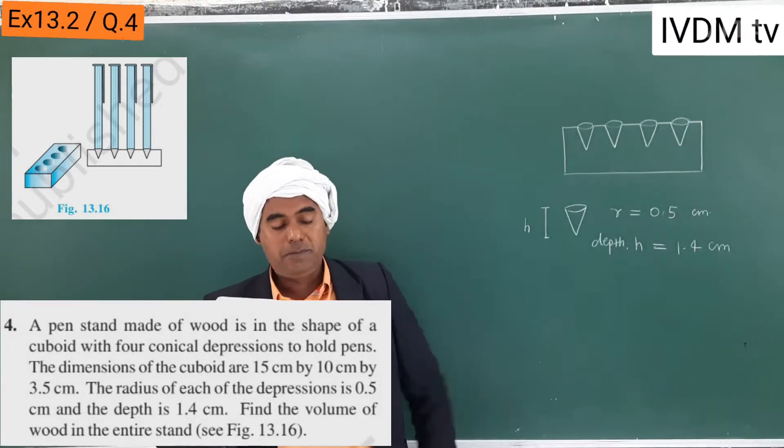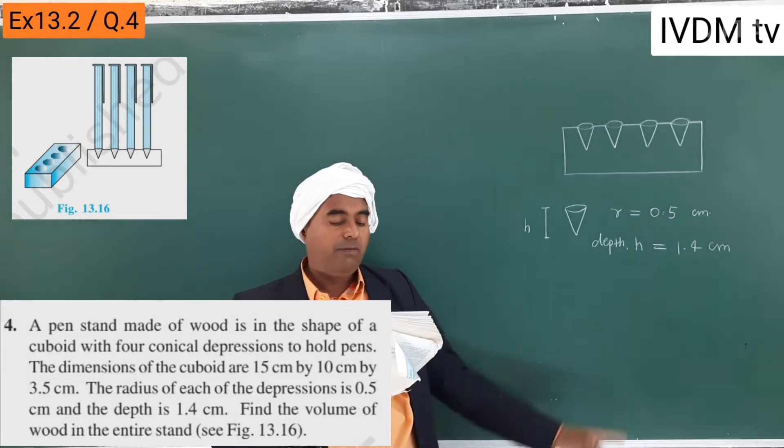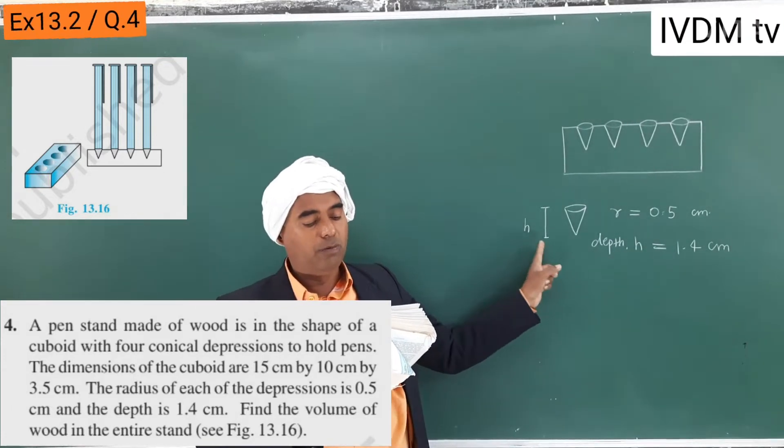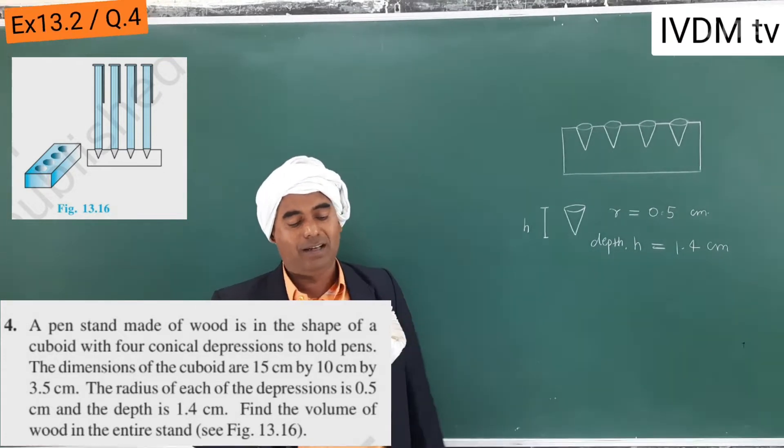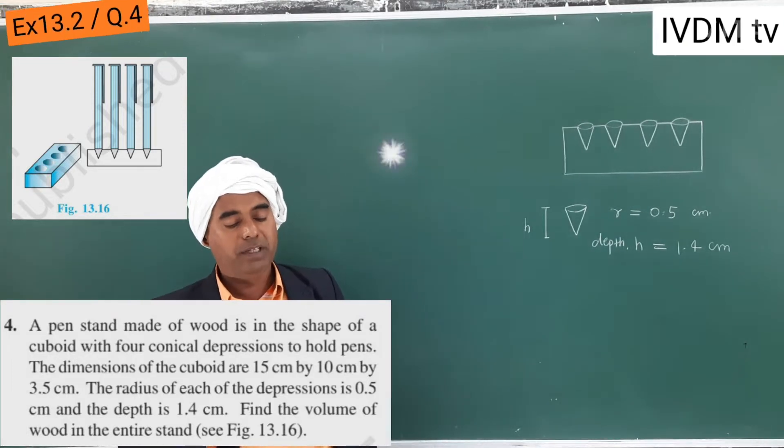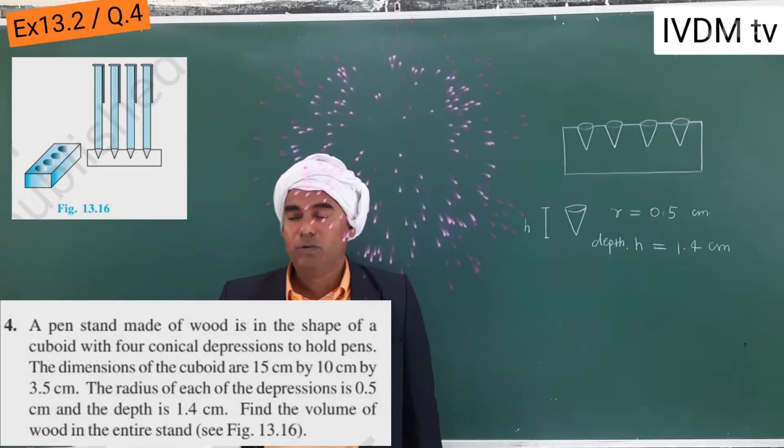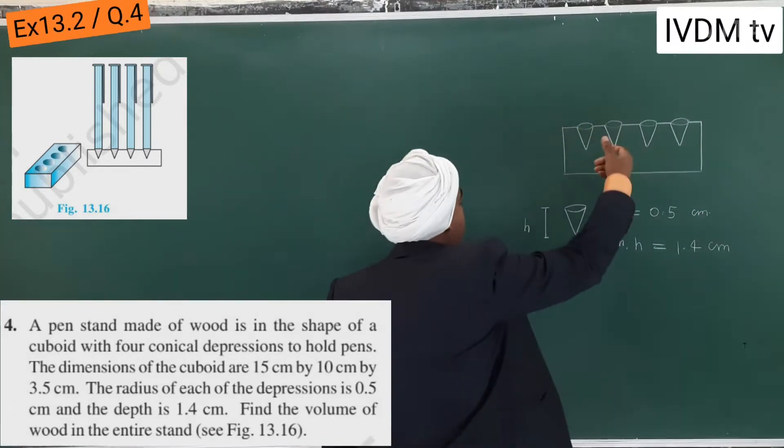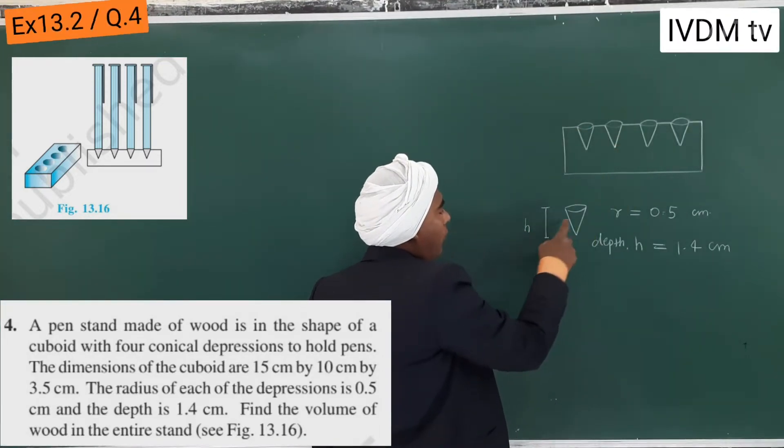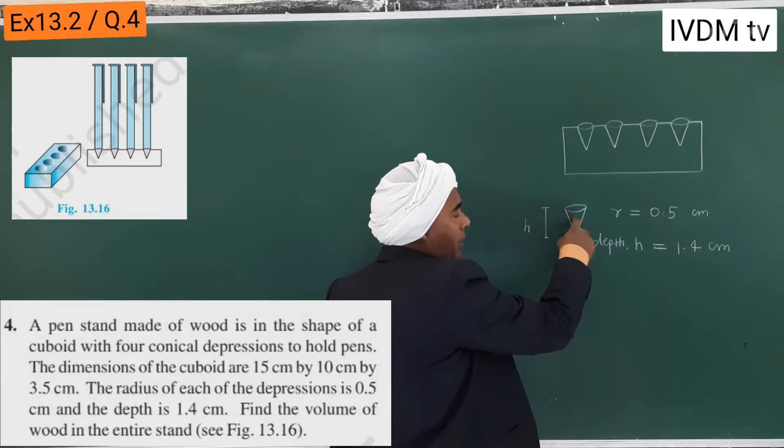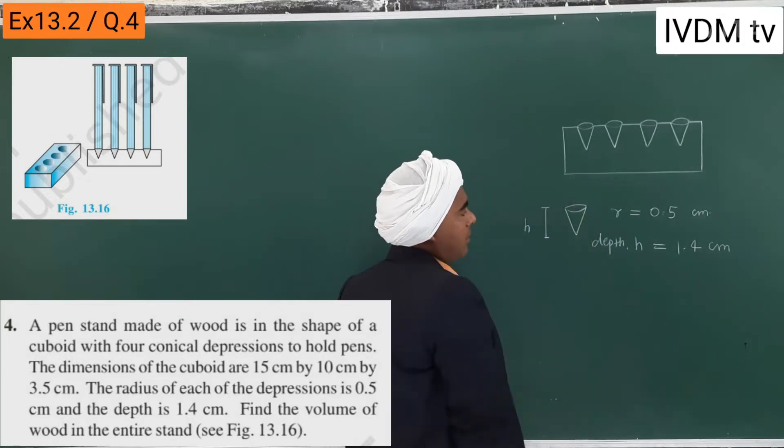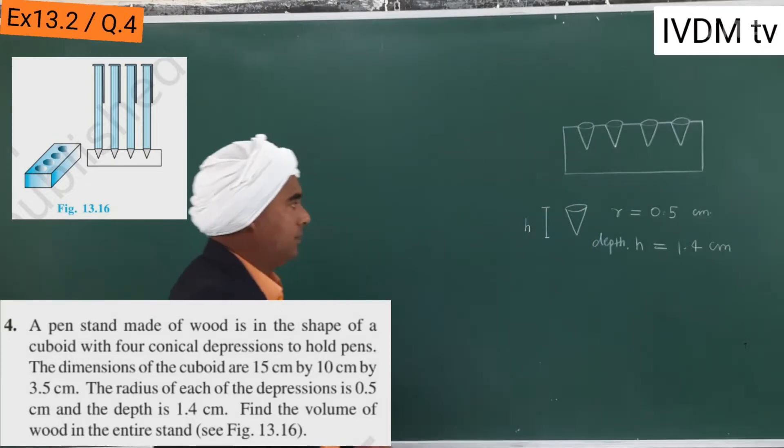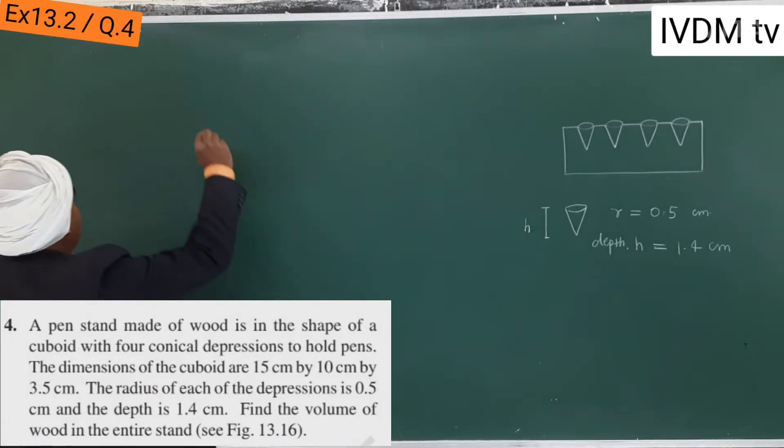Find the volume of the wood in the entire stand. Volume of wood is volume of the cuboid minus volume of four depressions, four volumes of cones. So now let's solve.